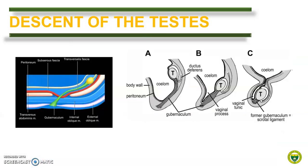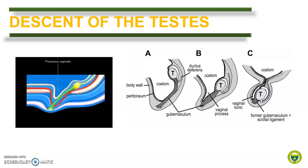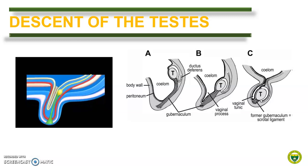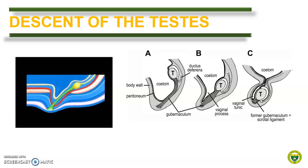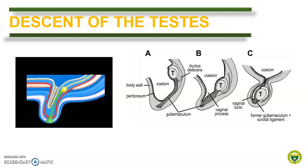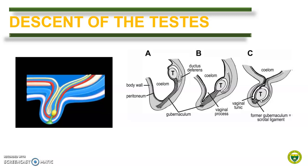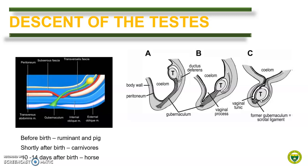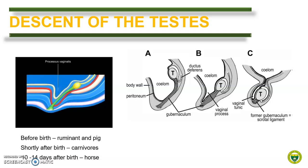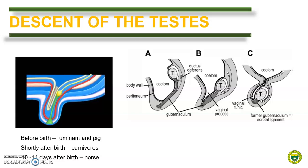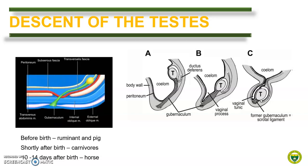Testis are originally located intra-abdominally. In the later stage of embryonic development, the testis migrate into the vaginal process covered by the scrotum to assume the adult position. This descent of the testis is guided by a structure called the gubernaculum. The descent varies per animal — it happens before birth in ruminants and in pig, shortly after birth in carnivores, and around 10 to 14 days after birth in horse.